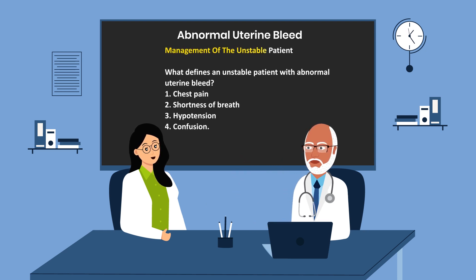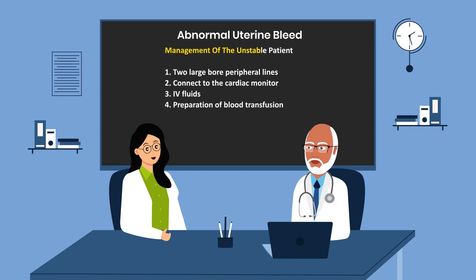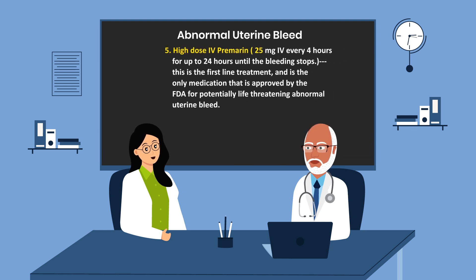What defines an unstable patient with abnormal uterine bleeding? The patient may have chest pain, shortness of breath, hypotension, or confusion. Management includes establishing two large-bore peripheral IV lines, connecting the patient to a cardiac monitor, starting IV fluids, and preparing the patient for blood transfusion. The medication of choice in the ER is IV Premarin, given at 25 milligrams IV every four hours for up to 24 hours until the bleeding stops.